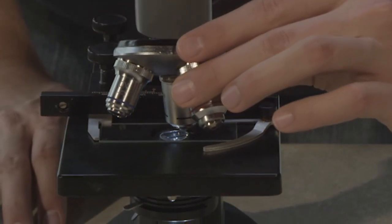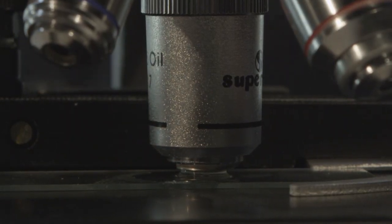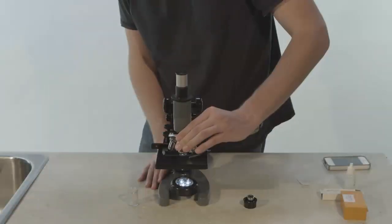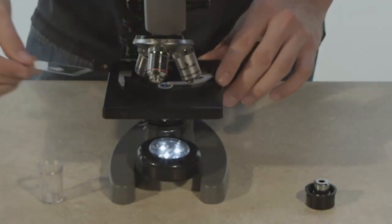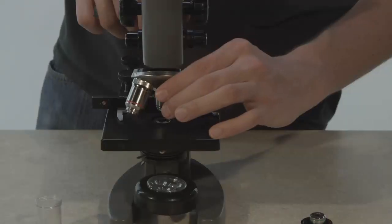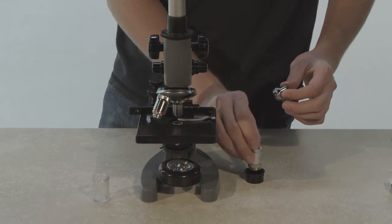Slowly, carefully rotate the oil immersion lens into place. It is intended to make contact with the oil. Do not be afraid of doing so. Once you are done with that slide, rotate the lenses back into their halfway position and remove the slide.